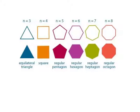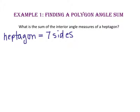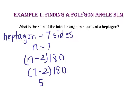Take a look at some of the regular polygons — the number of sides each polygon has and its name is given. In example one, we will find a polygon angle sum. What is the sum of the interior angle measures of a heptagon? We know a heptagon has seven sides, so we substitute 7 for n in the equation n minus 2 times 180. Since 7 minus 2 is 5, we use 5 times 180, which gives us an interior angle sum of 900 degrees for the heptagon.